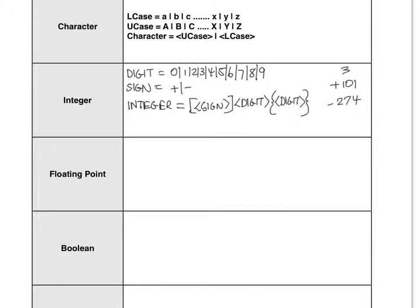In this next example, we're going to look at how to construct EBNF for floating point. So once again, we'll look at how a floating point can be represented. Examples include 3.1, plus 17.24, and minus 103.374 — those are all examples of valid floating point numbers.